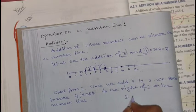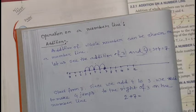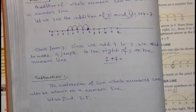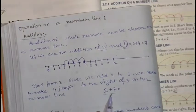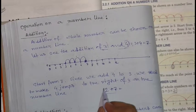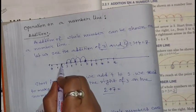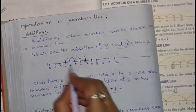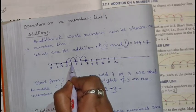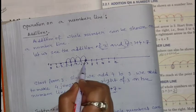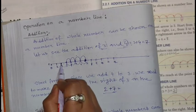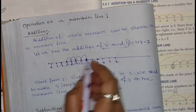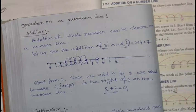If we add 2 and 7, we start from 2 on the number line. We need to jump 7 units to the right of 2. Jumping 1, 2, 3, 4, 5, 6, 7 units to the right, we reach 9. So 2 plus 7 equals 9. This is how you can perform addition on a number line.